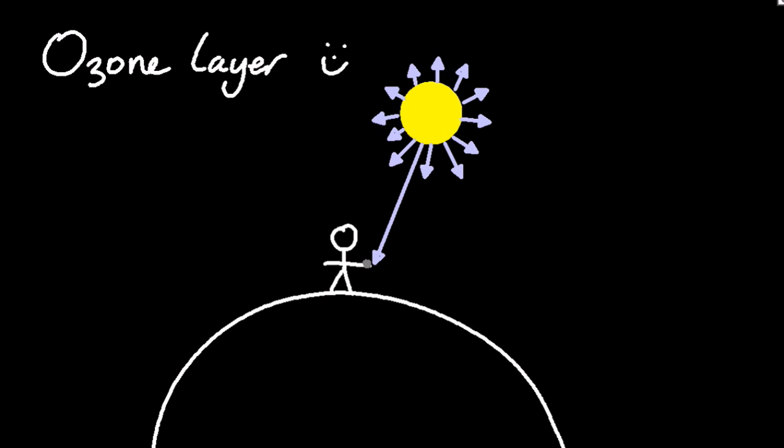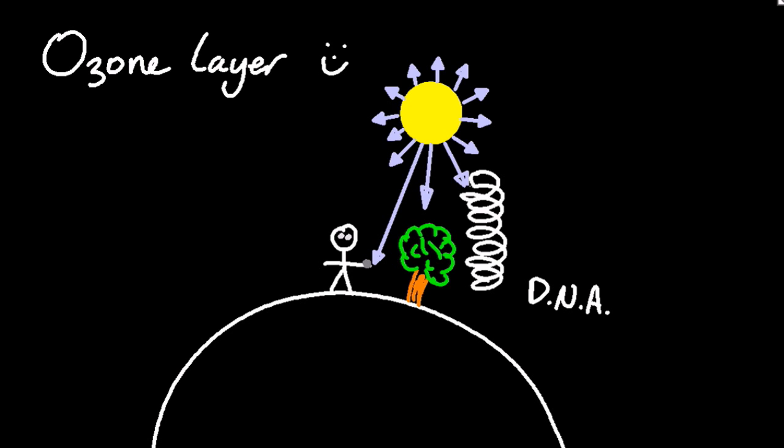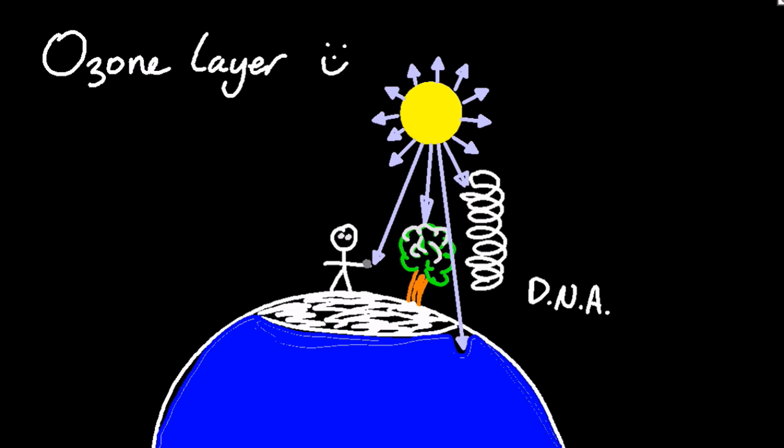This causes unwanted mutations, perhaps cancer. And these ultraviolet rays can also interfere with photosynthesis. Phytoplankton also are damaged by ultraviolet radiation.